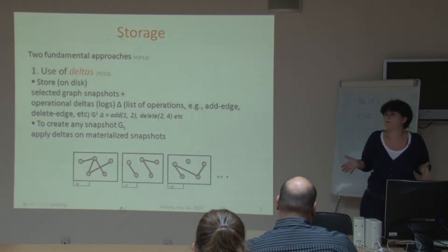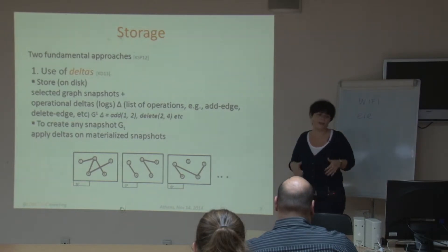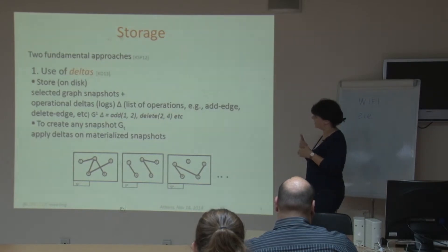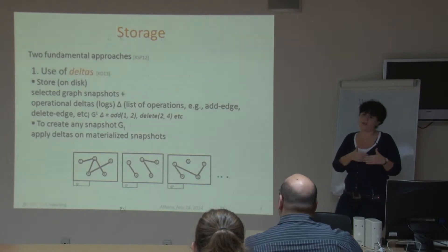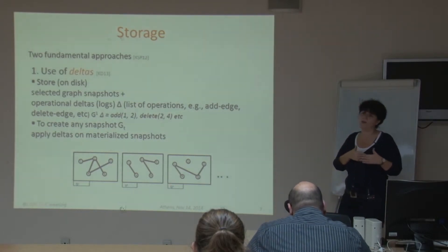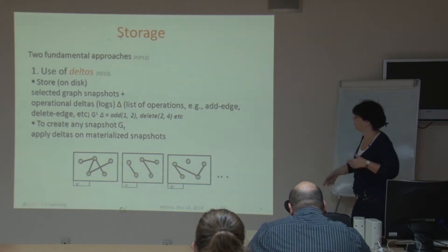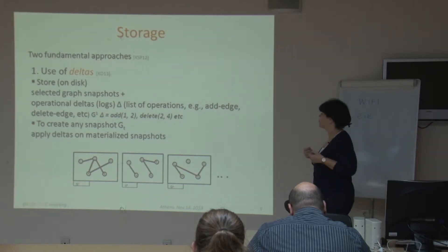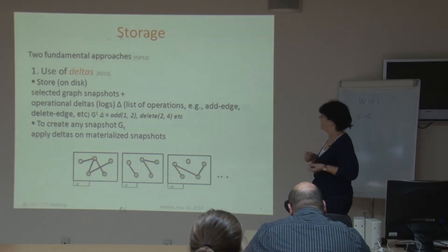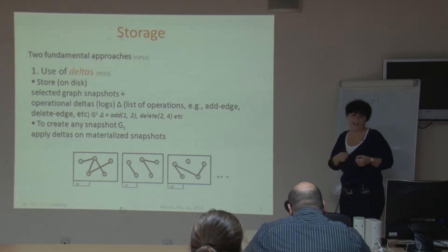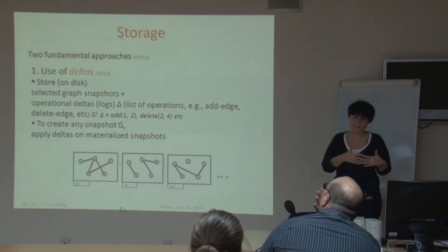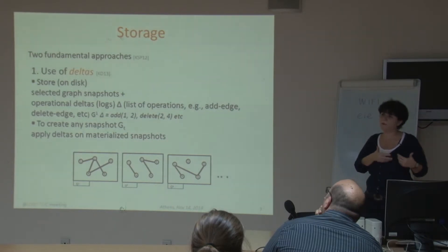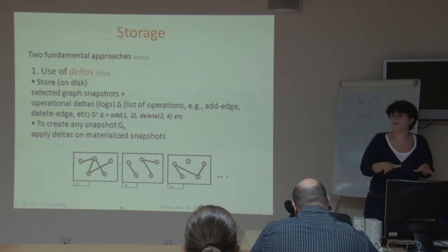There are two fundamental approaches to storing a sequence of graphs. One is using deltas — you store just a selected graph snapshot, one or more, and then store a log of operations. To create any snapshot, you apply this log on the materialized snapshot. For example, you may store the first graph in the sequence and then an operational log of the form: add edge (1,2), delete edge (1,2), add edge (2,4), and so on. There are many variations: which snapshots to store, how to combine deltas, and how to store deltas in memory or on disk.